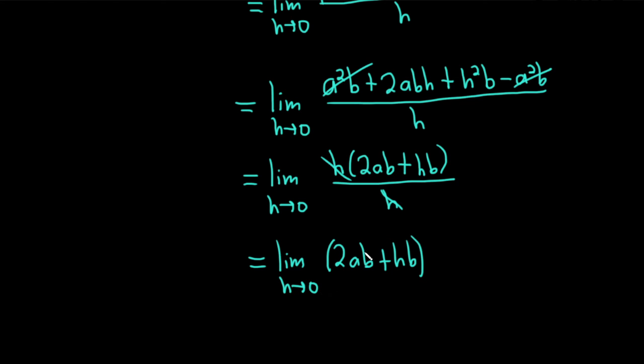And now we're finally at a point where we can plug in h. We couldn't do that before because we would have ended up dividing by 0. So this is equal to 2ab. And when you put h equals 0 here, you just get 0 times b, which is just 0. So you just get 2ab. And that would be the final answer.